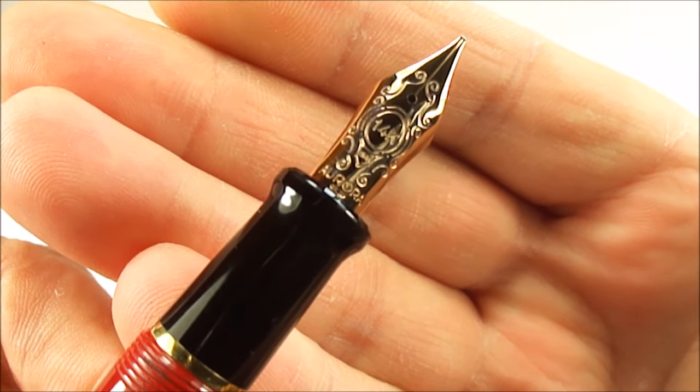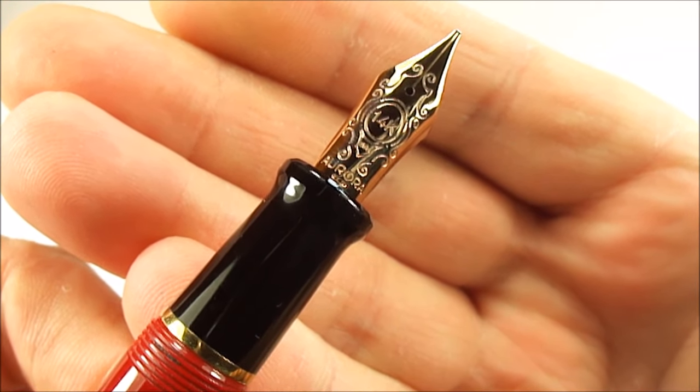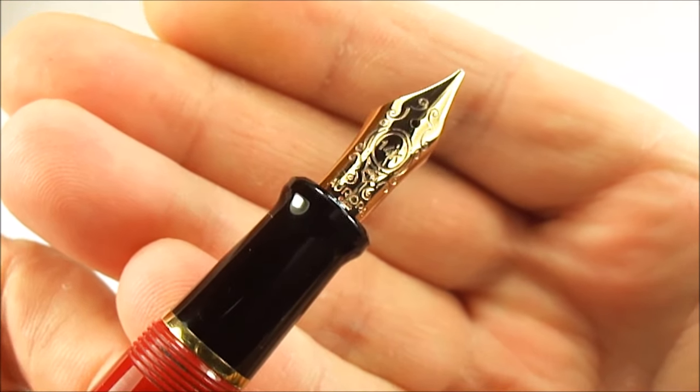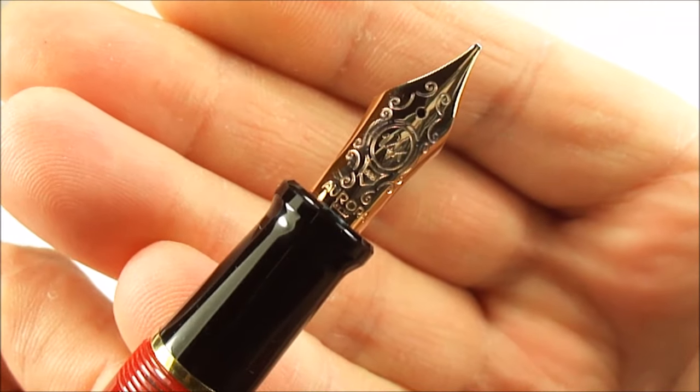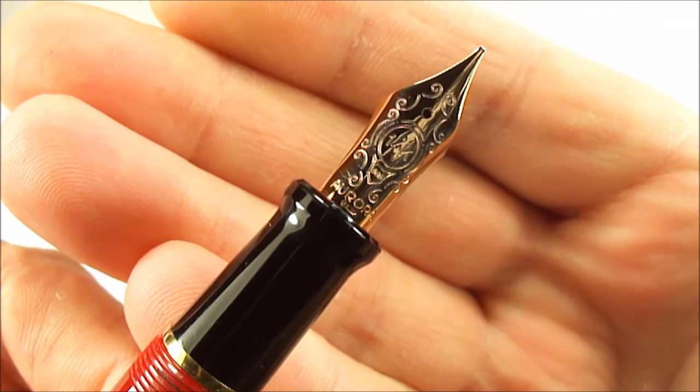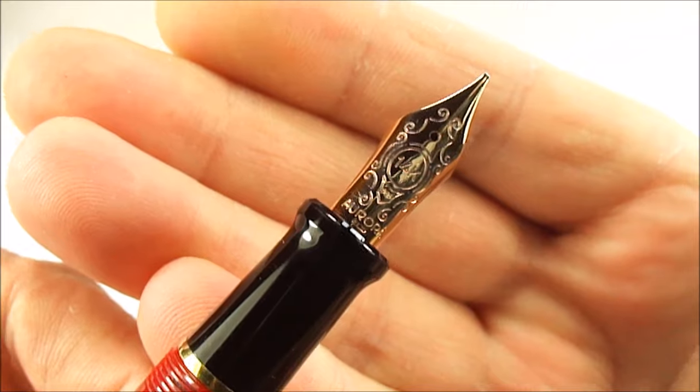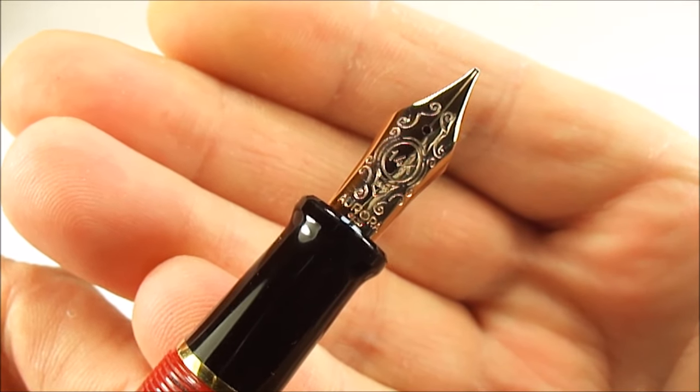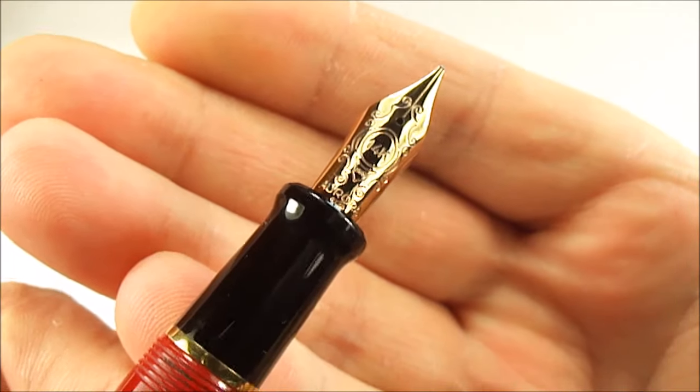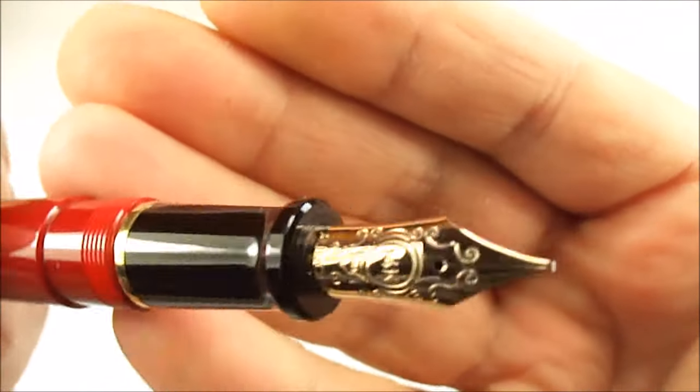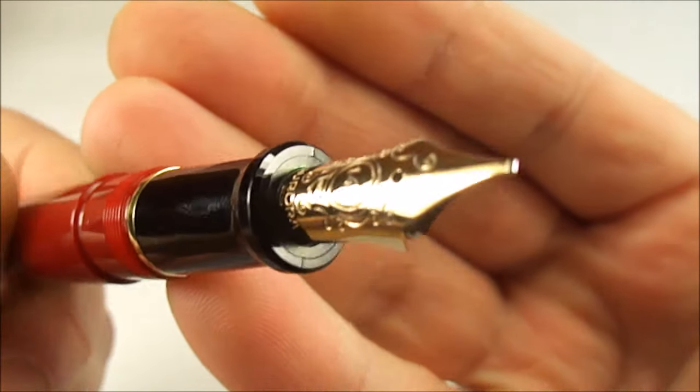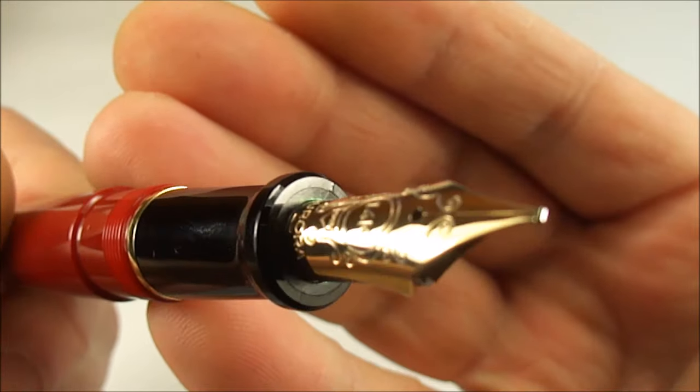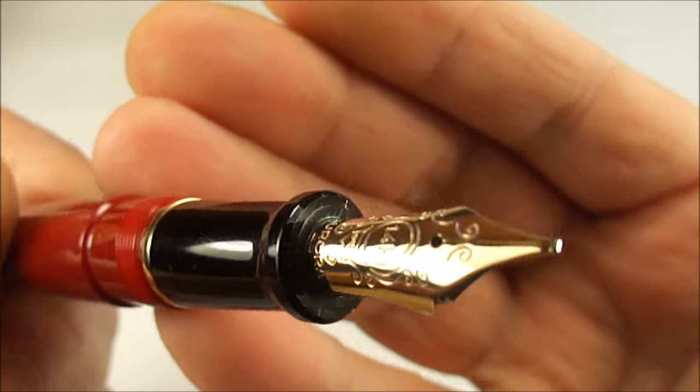When we say nib, let's show you the nib. A lovely nib as you would expect from a major manufacturer of fountain pens, and this particular one is a 14 carat 585 Aurora nib. Quite a large nib as well. Let's give you different angles, you can see the sort of the engraving, a very nice nib if I may say so.